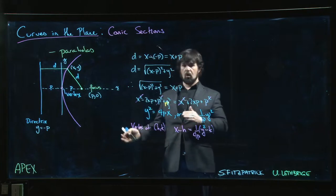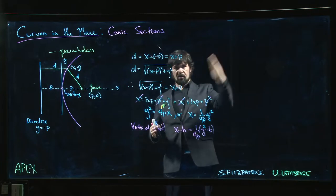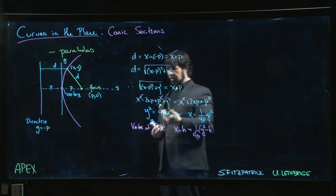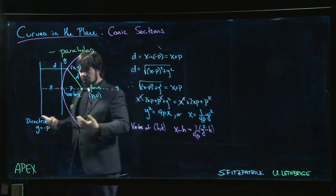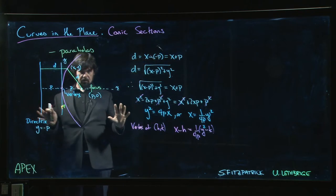So we can do parabolas opening left, right, up, down. We don't do parabolas at funny angles, because again, that would require us to introduce cross terms with x times y. It's not that you can't do it. It's just that we want to keep things simple. So we'll just look at those four possibilities.